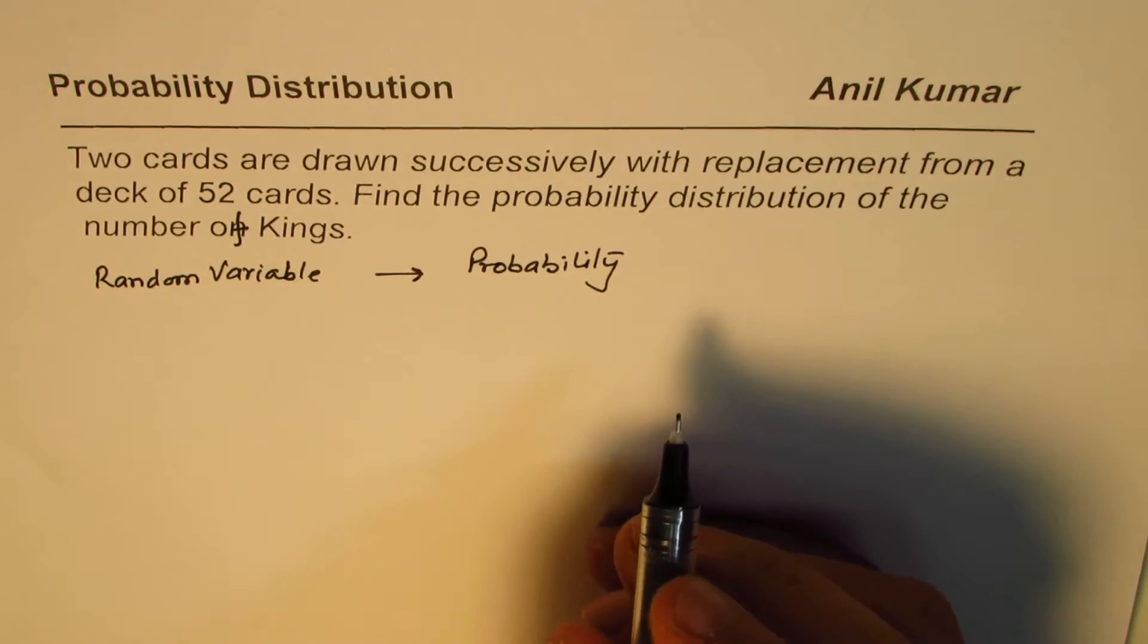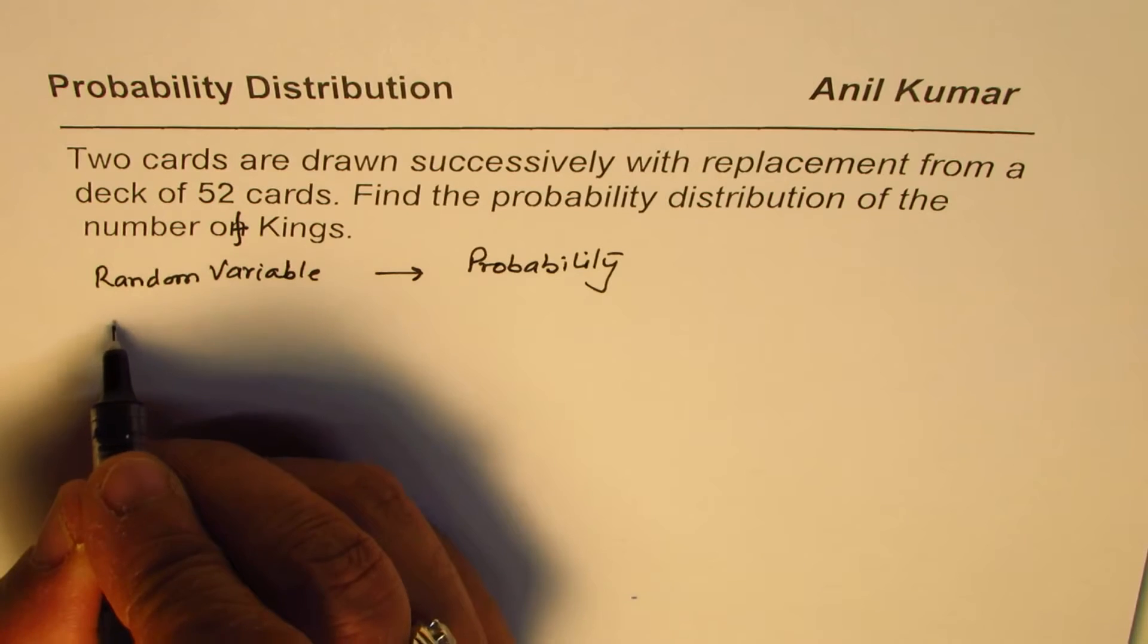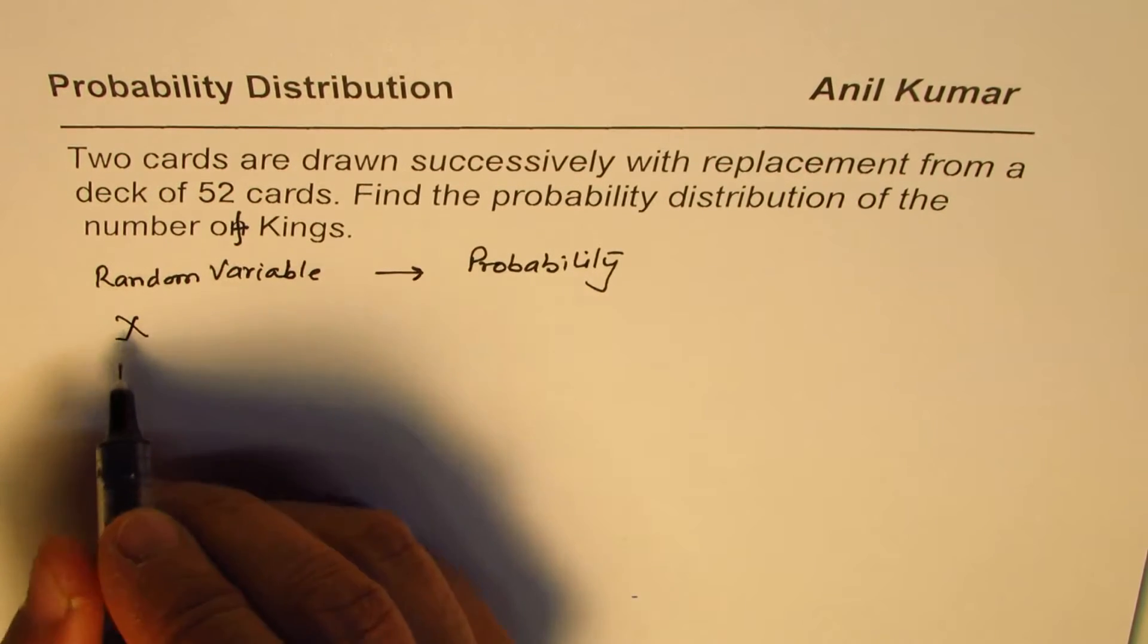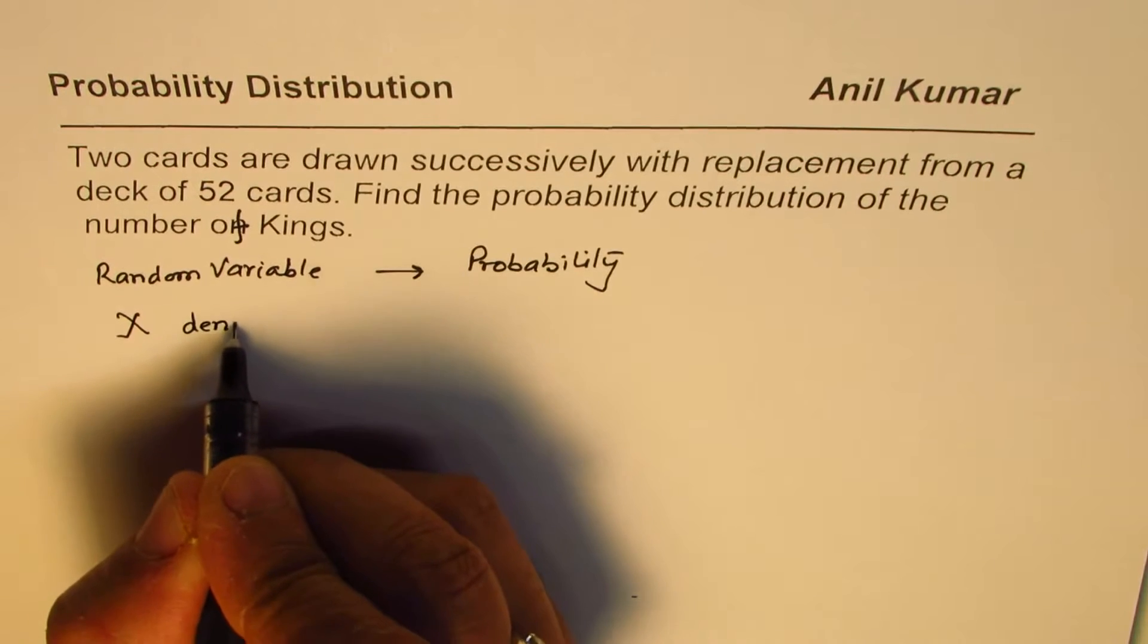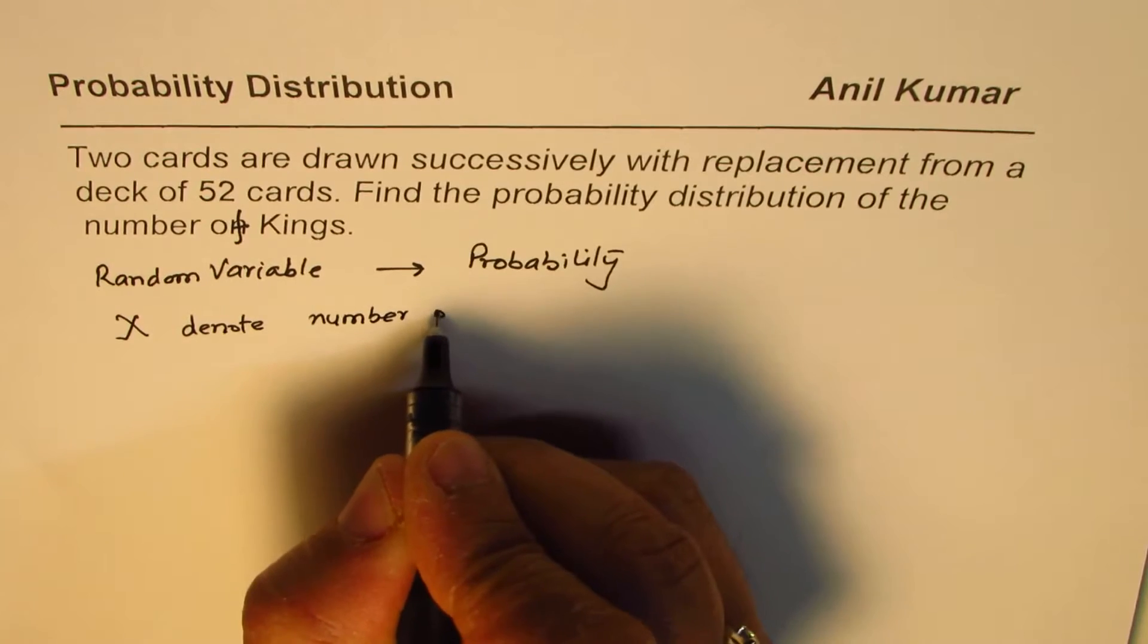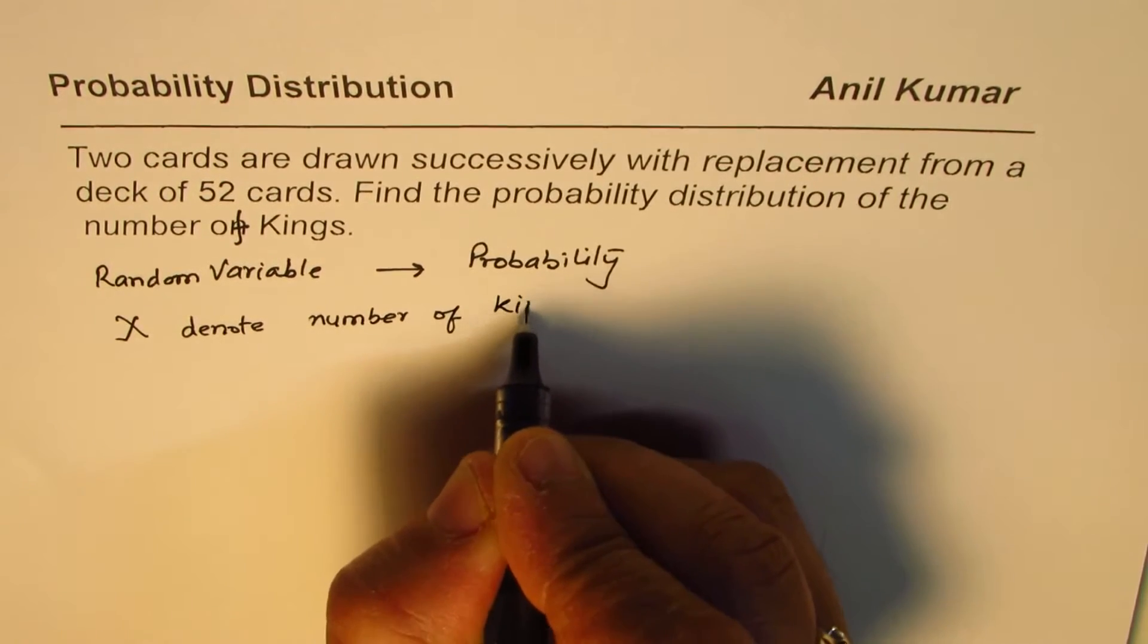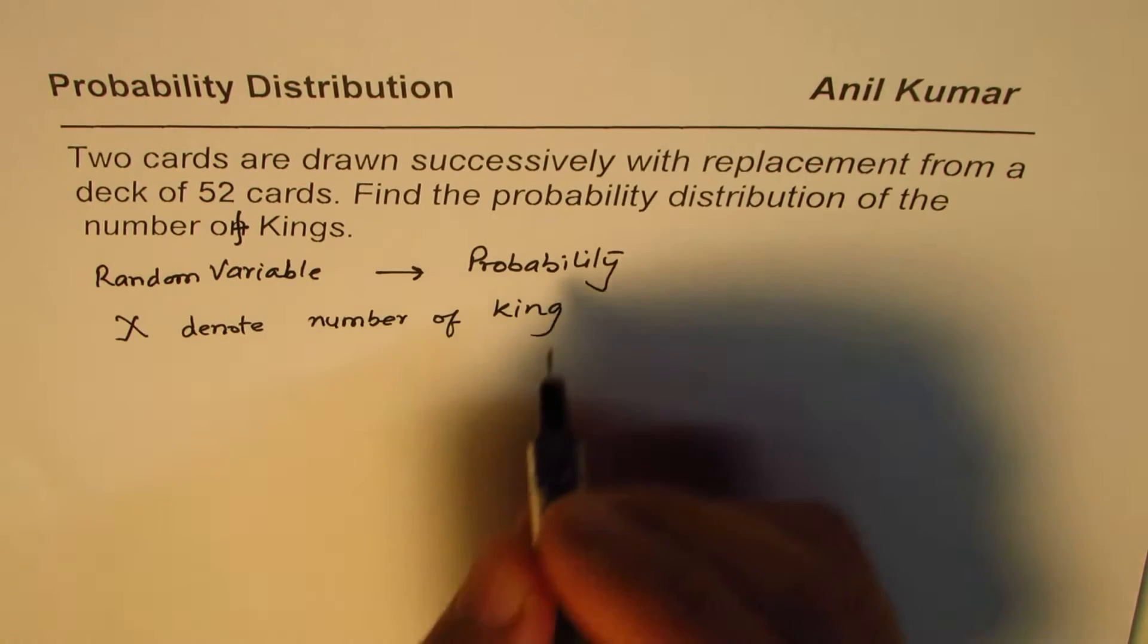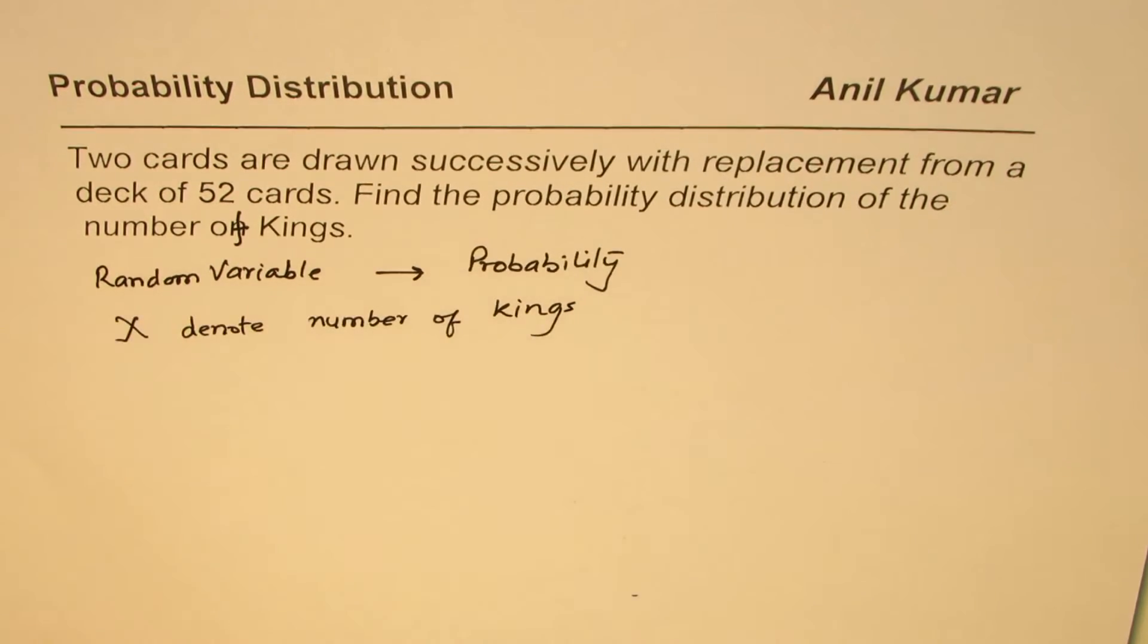Let us define the random variable with the letter X and let X denote number of kings. King is a face card. We have four kings in a deck of 52.